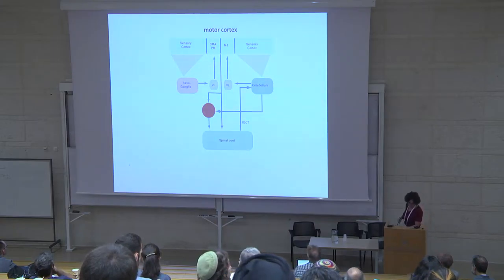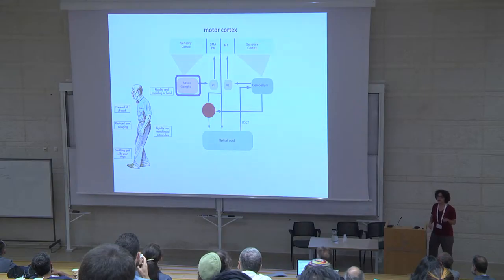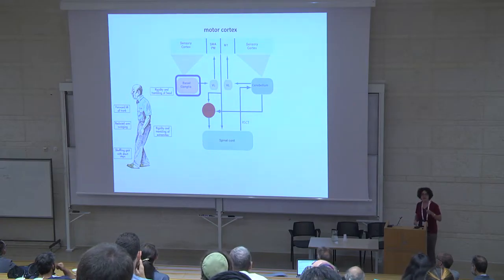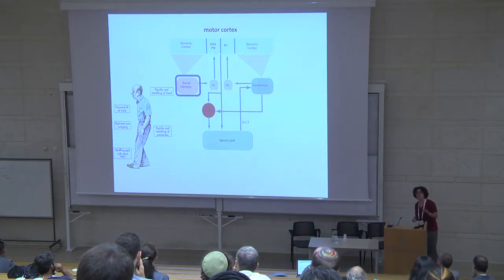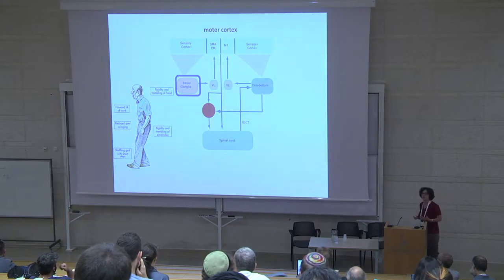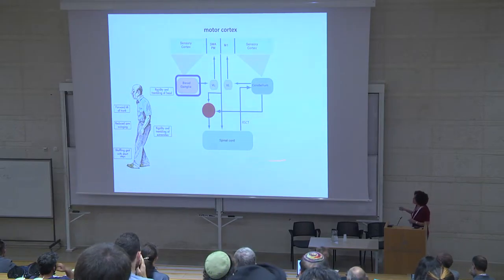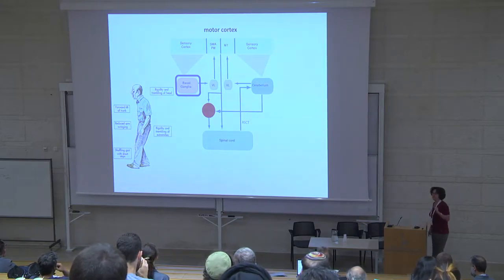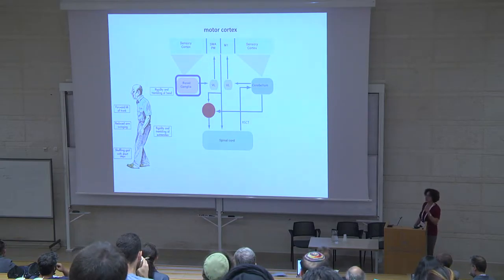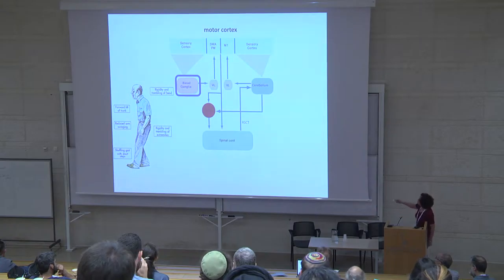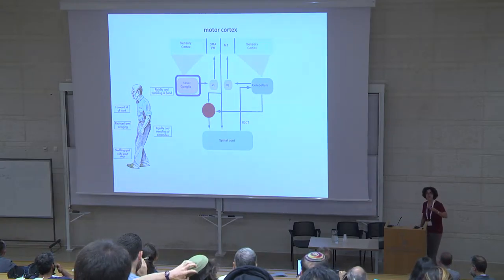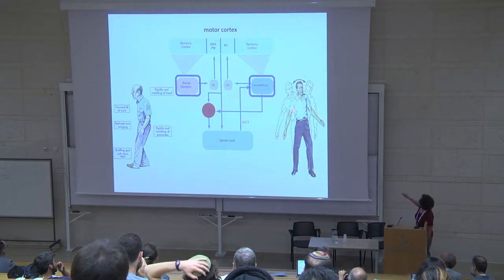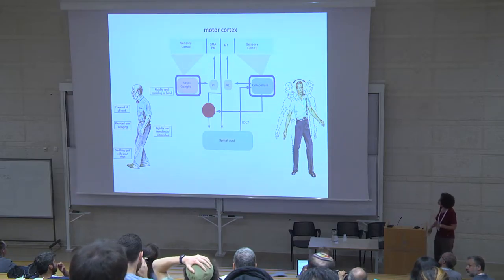We can see this by looking at what happens when some pathology affects these loops and information flow is impaired. For example, pathologies of the basal ganglia — the most famous being Parkinson's disease, whose most prominent symptoms are deficits in motor performance — but other basal ganglia pathologies also involve motor deficits, like Tourette syndrome and OCD. So we think the basal ganglia and its projection back to the motor cortex has a major impact on the control of voluntary movement.